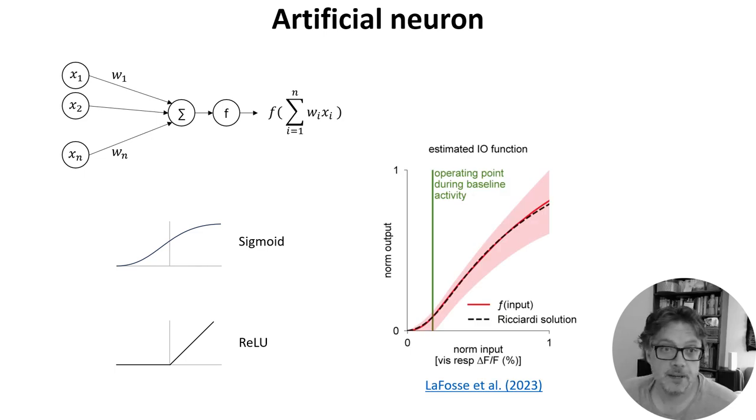Interestingly, there's still papers being published about what's the best model of real neurons' activation functions, like this one from 2023, which looks a bit intermediate between sigmoid and ReLU.